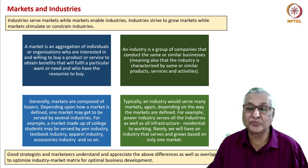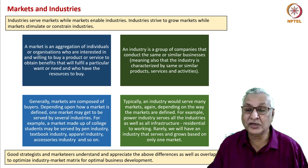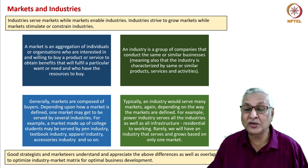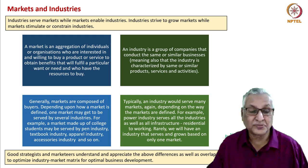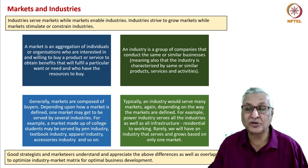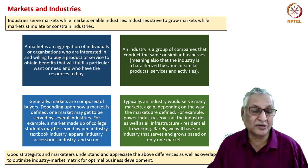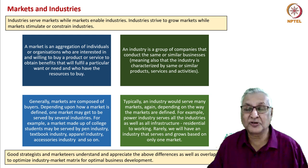Typically an industry would serve many markets. Just as a single market is served by many industries, a single industry also serves many markets. For example, the power industry serves all manufacturing, service, and infrastructure sectors. Even a product as simple as the energy meter industry serves not only the oil industry but also the gas and fluids industries. Good strategists appreciate these differences and overlaps to optimize the industry-market mix for aggressive business development.